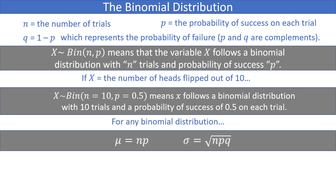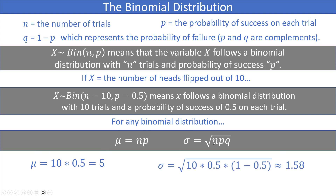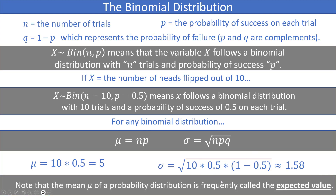For any binomial distribution, you can find the mean by taking n times p, and the standard deviation by taking the square root of n times p times q. For the coin flip example, the mean is 10 times 0.5, which equals 5 — meaning on average you'd expect 5 heads. The standard deviation is the square root of 10 times 0.5 times 0.5, which is approximately 1.58. Note that the mean of a probability distribution is frequently called the expected value.